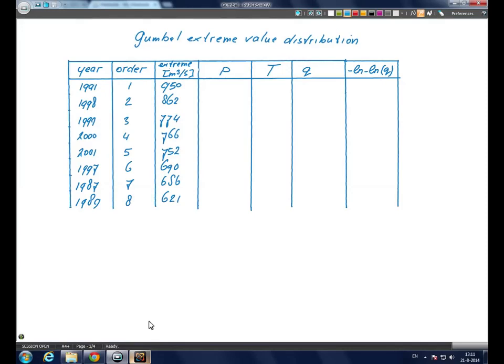Now we can draw up the probability of exceedance, P, according to the plotting position, which is i over n plus 1, where i is the order number and n the total number of observations. For the first year this would be 1 over 9 equals 0.11.